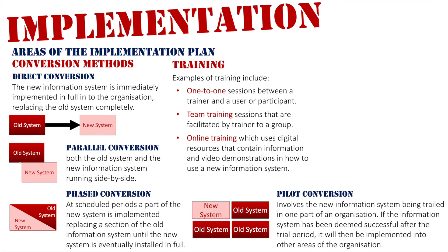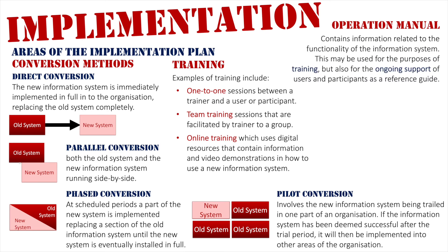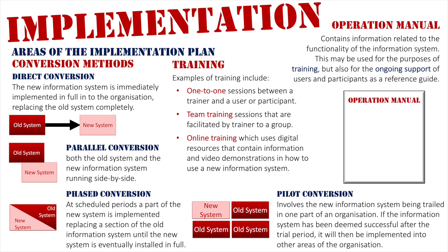The final thing we're going to look at as part of the implementation plan is the operations manual. This contains information related to the functionality of the system — it's the manual for the system that tells you how it works. It can be used for training, but it's also for the ongoing support of users and participants as a reference guide once the system is implemented. After the project team leaves, the organization needs that ongoing support, so users and participants can access the operations manual instead of having to contact the project team.